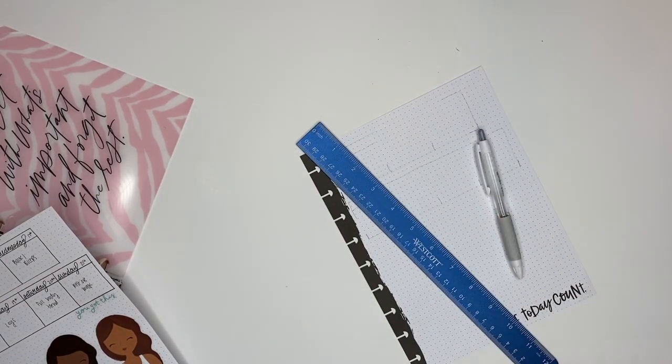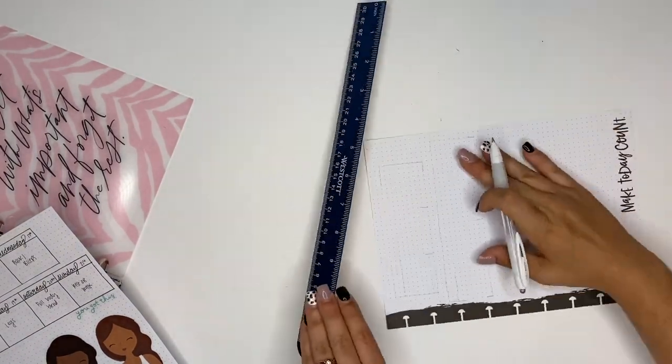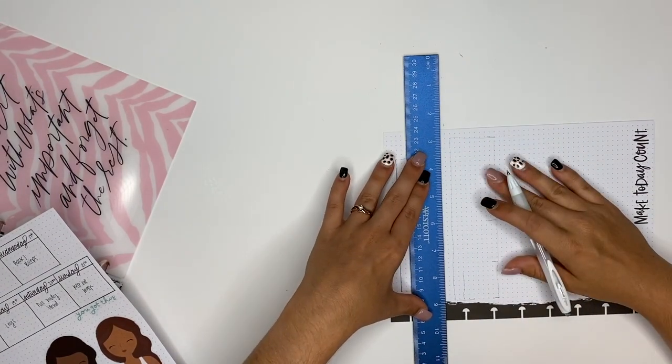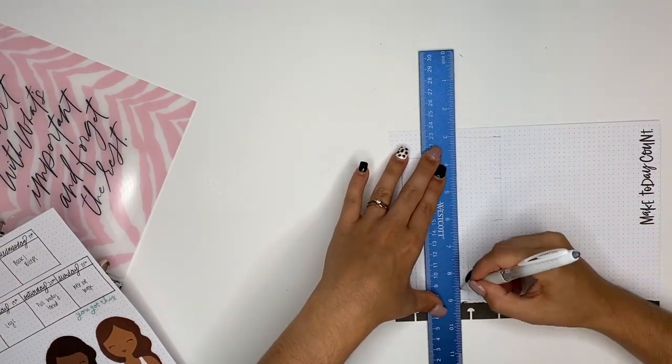I do use a ruler for the longer lines so that way they're straight. I can't draw a straight line to save my butt.